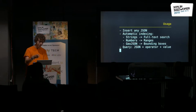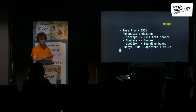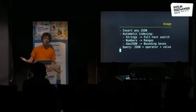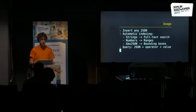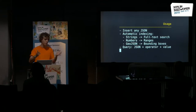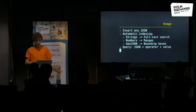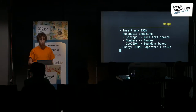So we do indexing automatically. Strings become available for full-text search. Numbers — you can do queries on ranges. GeoJSON will result in bounding boxes, so you can do Geo queries on it. And as you've seen from the query language, you just put in the JSON from the result, put an operator in front of what you want to query on. And that's it.